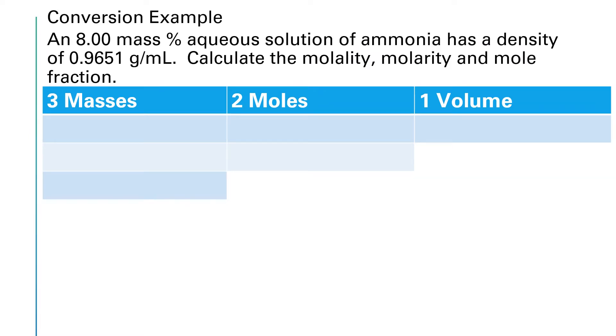Let's do an example. We have an 8 mass percent aqueous solution of ammonia with a density of 0.9651 grams per milliliter. Find the molality, the molarity, and the mole fraction. All right, on this problem, since we've got to find three different concentration units, we might as well just fill out the 3, 2, 1 table because we're going to need every number in this table anyway.